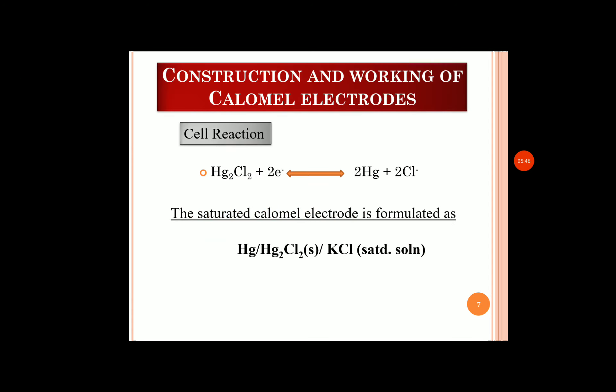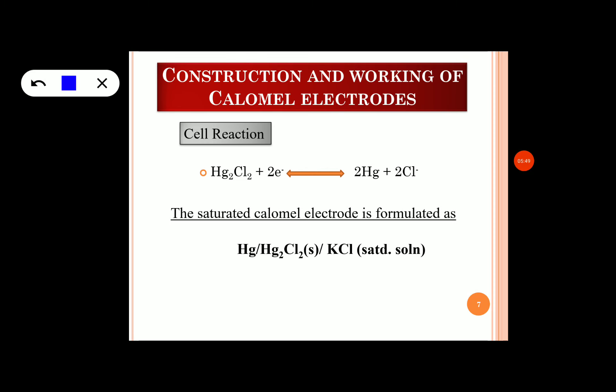Let us know the cell reaction. In the calomel electrode, mercurous chloride accepts two electrons and gets reduced to mercury and 2Cl⁻. This is the cell reaction. A saturated calomel electrode can be represented as: Hg | Hg₂Cl₂ (insoluble salt of mercury) | KCl (saturated solution).